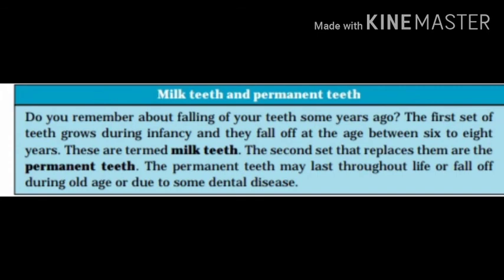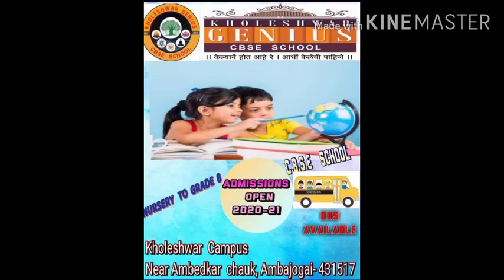Do you remember about your teeth falling off some years ago? The first set of teeth grows during infancy and they fall off at the age between 6 to 8 years. The second set that replaces them is the permanent teeth. The permanent teeth, once lost, are lost throughout life and may fall off during old age or due to some dental disease. This is the most important thing to know about milk teeth and permanent teeth.